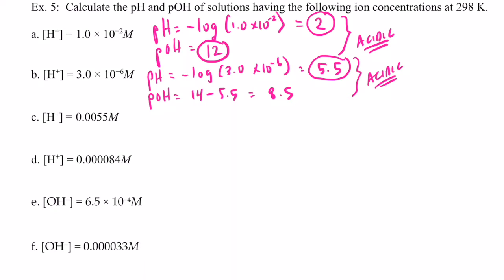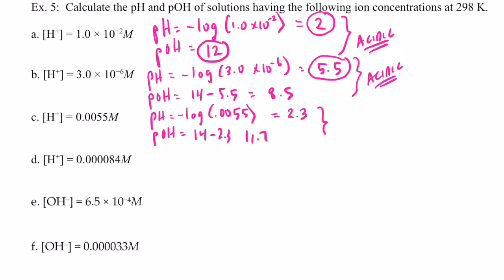Alright, for letter C, the pH will be the negative log of 0.0055. So we go negative log 0.0055, enter — and I get 2.3. The pOH would be 14 minus 2.3, and so we end up with 11.7. This is also acidic — the pH is less than 7.